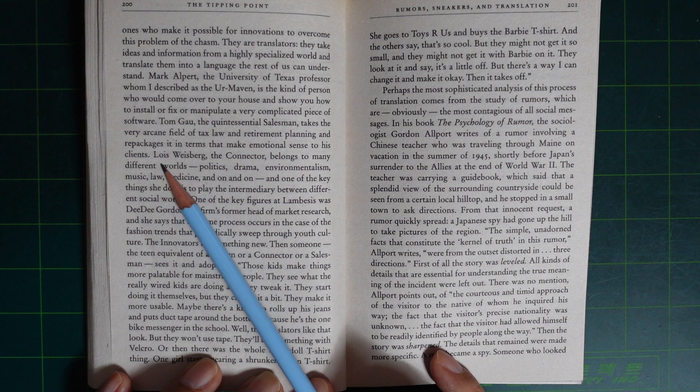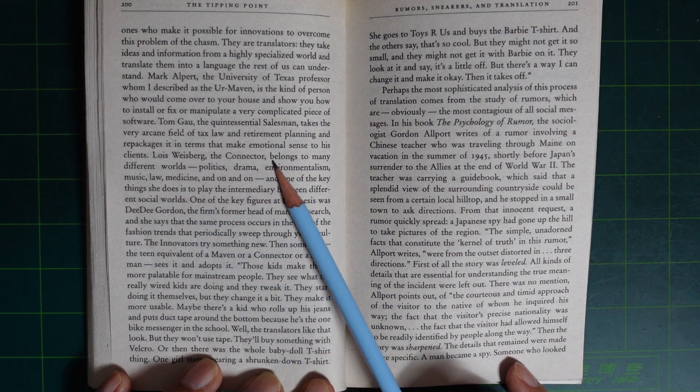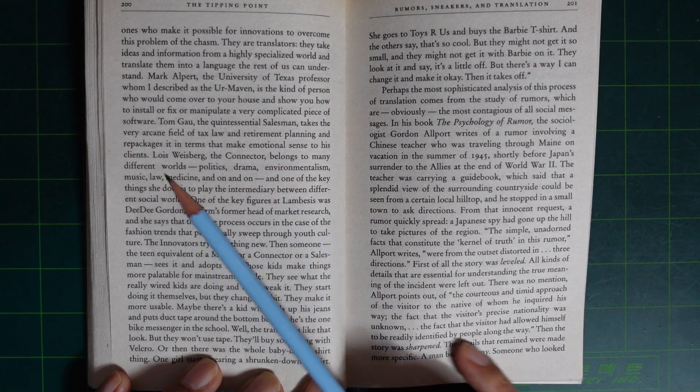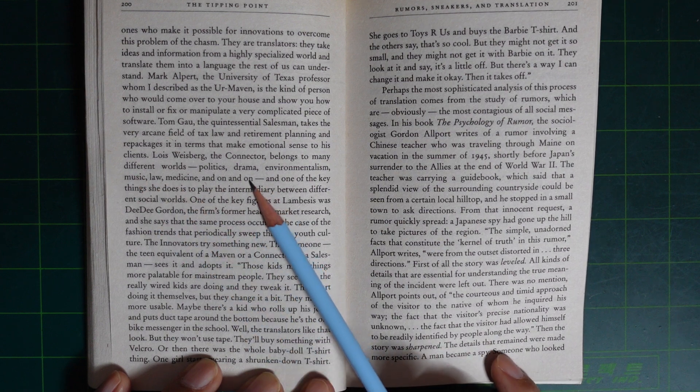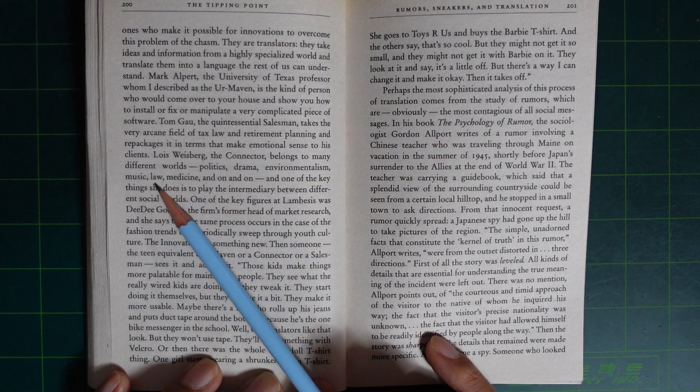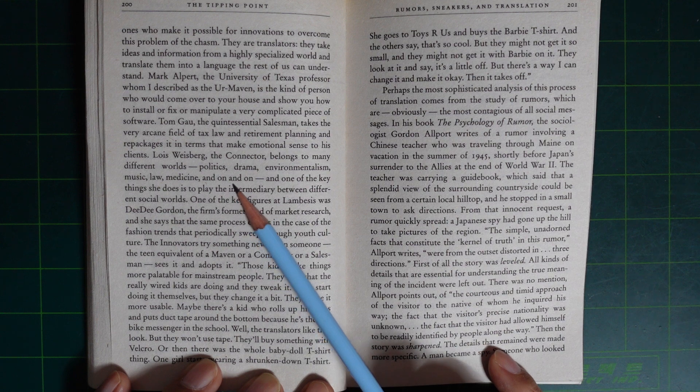takes the very arcane field of tax law and retirement planning and repackages it in terms that make emotional sense to his clients. Lois Weisberg, the connector, because she belongs to many different worlds—politics, drama, environmentalism, music, law, medicine and on and on.